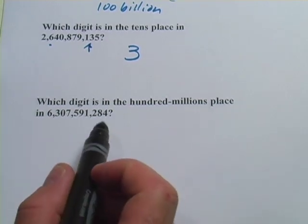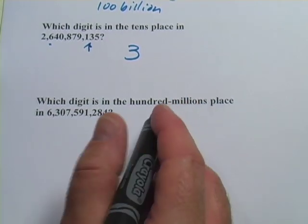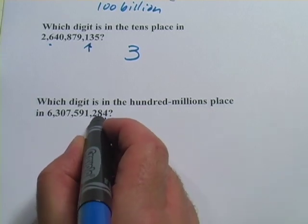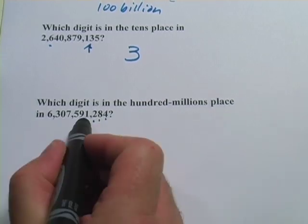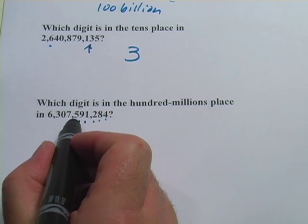Last one. Which digit is in the hundred millions place? Okay. So we've got ones, tens, hundreds, 1,000, 10,000, 100,000.